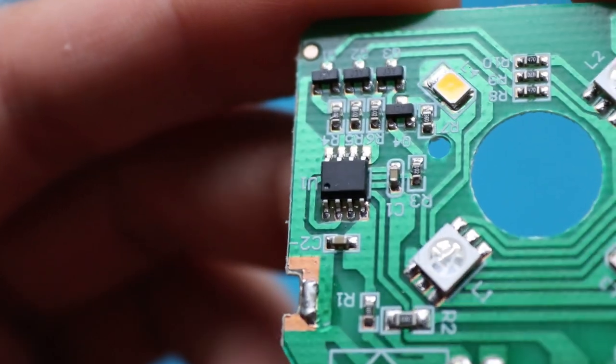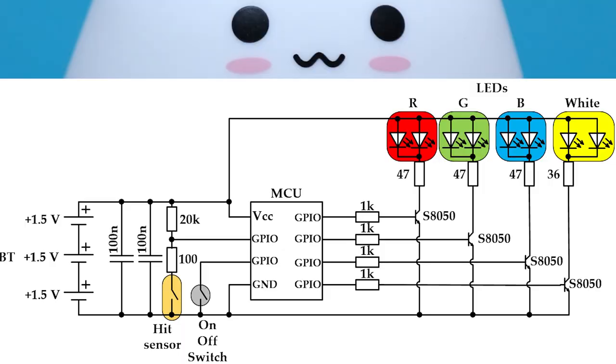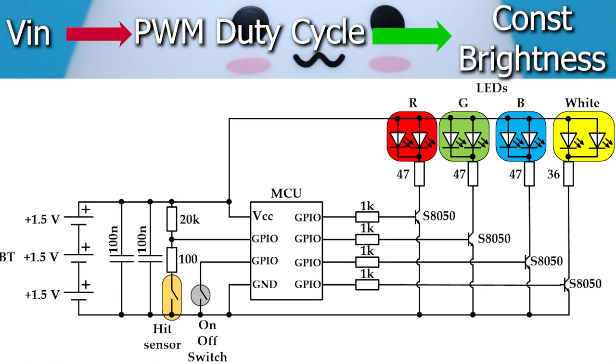There are some techniques that can help maintaining constant brightness even without DC-DC converter. For example, using analog-to-digital converter, that usually every MCU has. Using such a converter, input voltage can be measured. And then, knowing the input voltage, duty cycle can be adjusted in order to have constant brightness at different voltage levels.